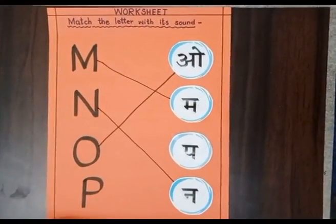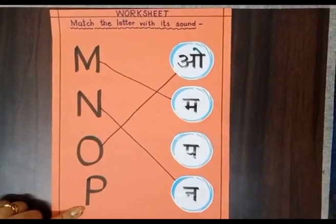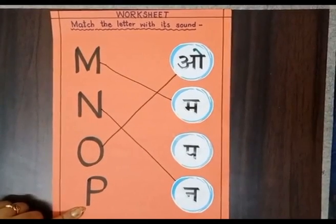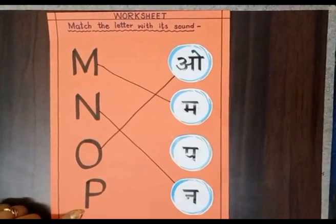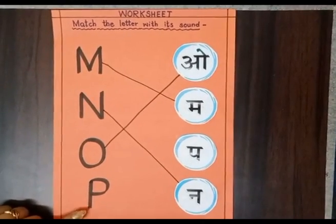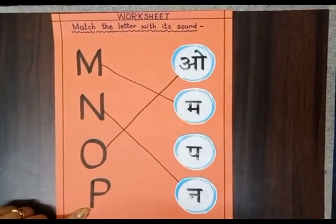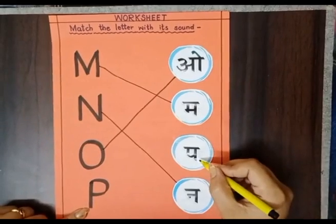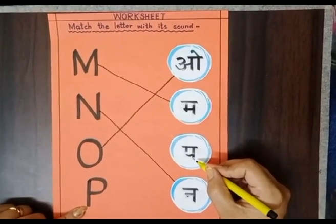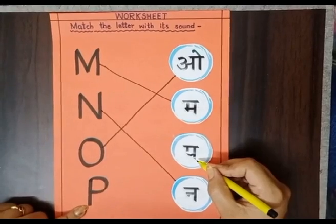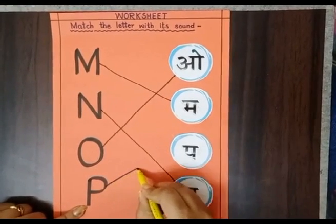Now the last letter is letter P. P, parrot. P, peacock. This is letter P. And where's the sound of P? This — P, pa, peacock. So match the letter P with its sound.